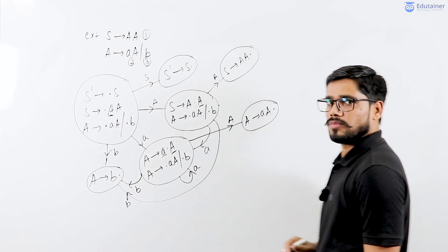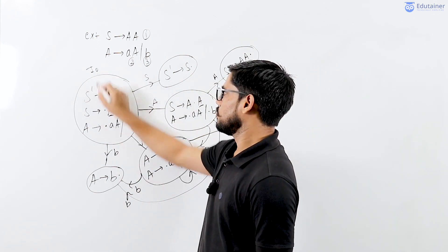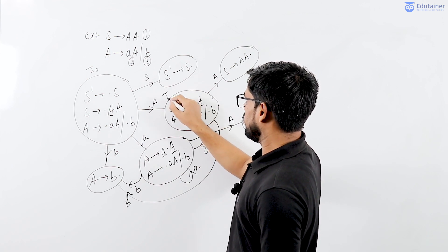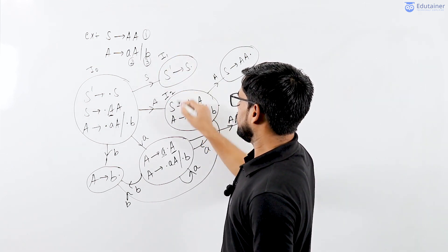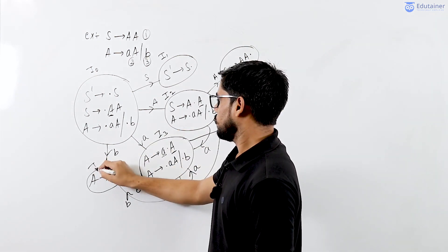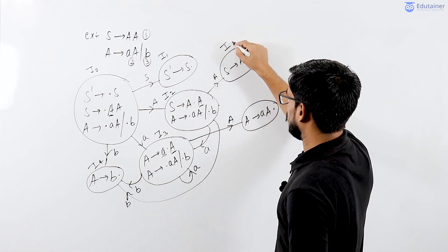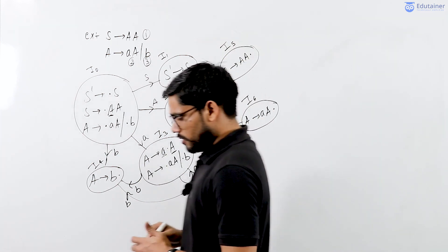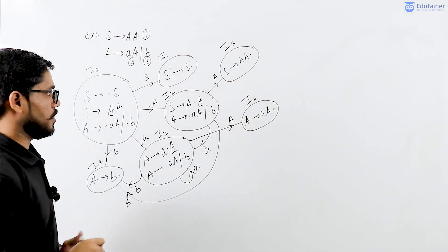So how many states are here? The total states are I0, I1, I2, I3, I4, I5, I6 — total seven states are present in this canonical collection of LR0 items.